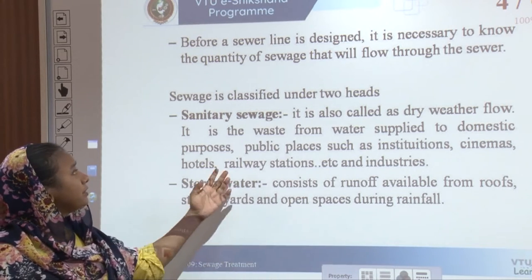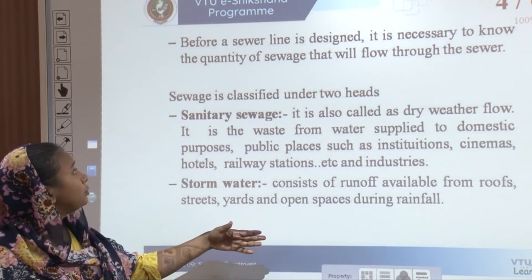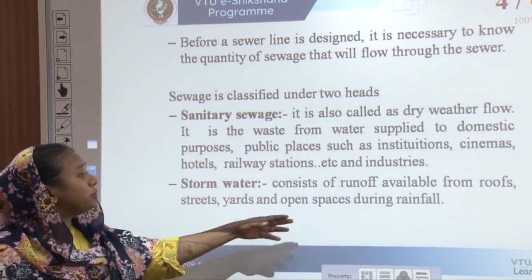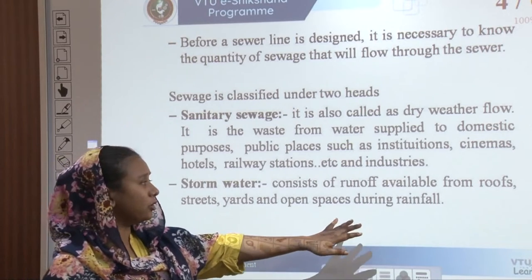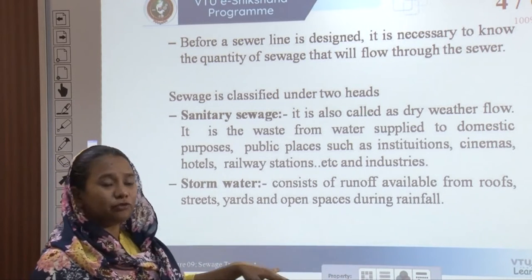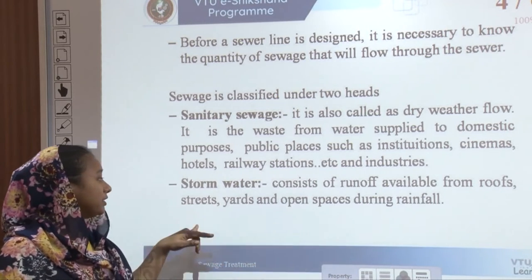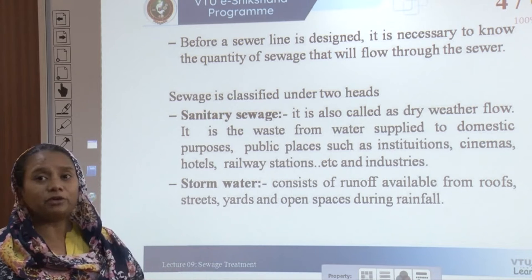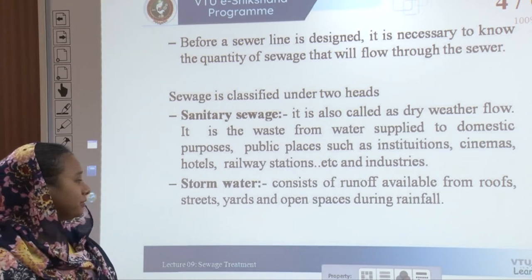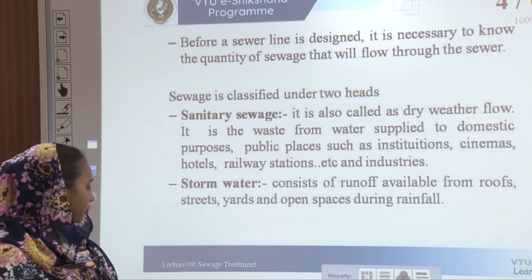Storm water is another type of sewage which consists of all the runoff available from roofs, streets, yards, and open spaces during rainfall.